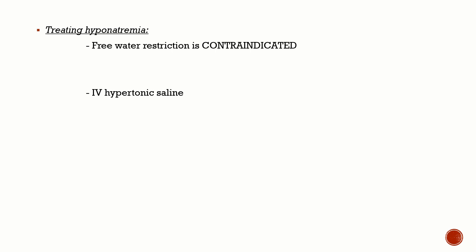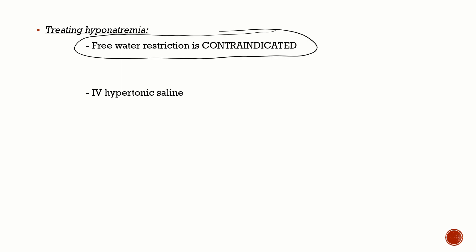For treating hyponatremia in SAH: as emphasized, free water restriction is contraindicated because it causes hypovolemia and increases stroke risk. Most of the time you will need to give intravenous hypertonic saline. This concludes the discussion on subarachnoid hemorrhage, covering most of the important points.